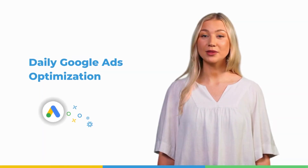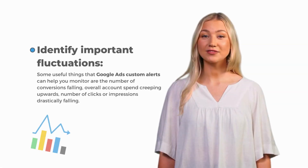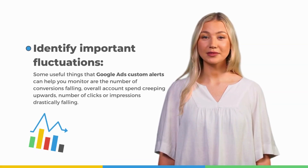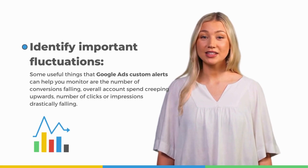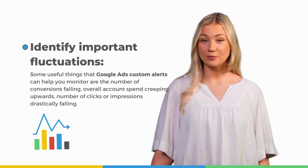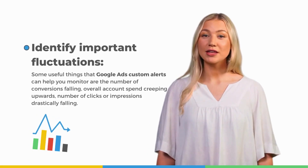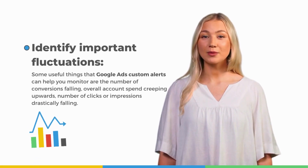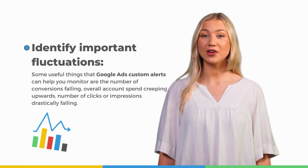Daily Google Ads Optimization: Identify important fluctuations. Some useful things that Google Ads custom alerts can help you monitor are the number of conversions falling, overall account spend creeping upwards, and number of clicks or impressions drastically falling.